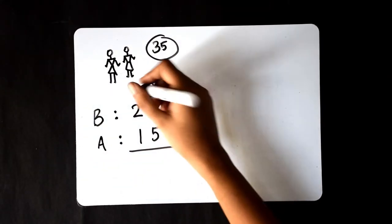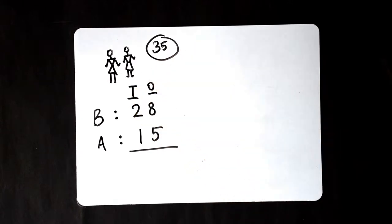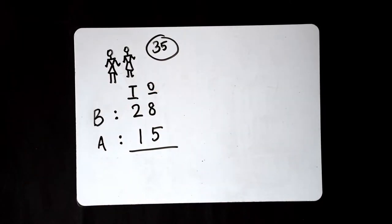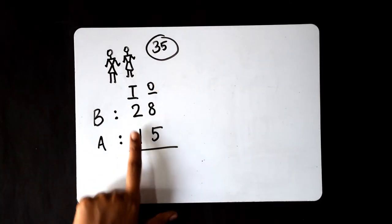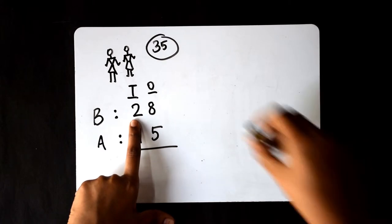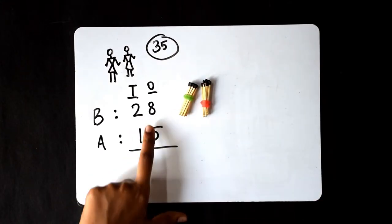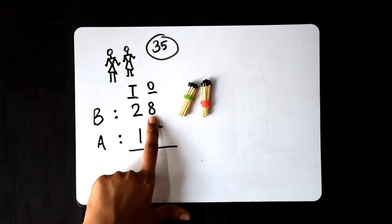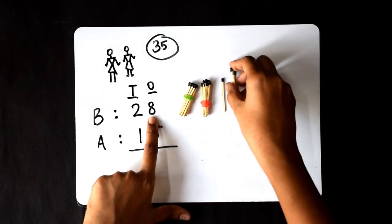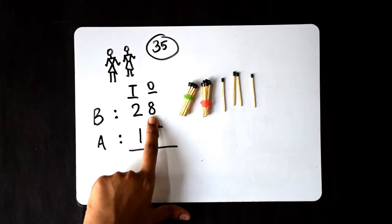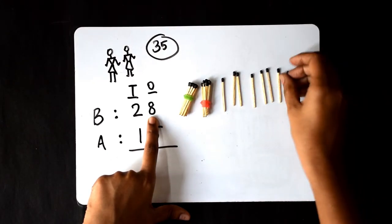These are the ones and these are the tens. Let's represent these numbers using matchsticks. So, in 28, we have two tens: 10 and 20. Now, we have 8 ones. Let's represent those too: 1, 2, 3, 4, 5, 6, 7, and 8.